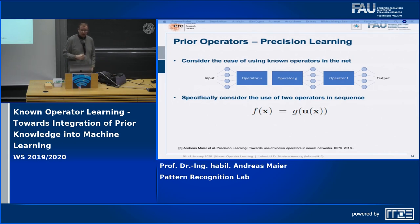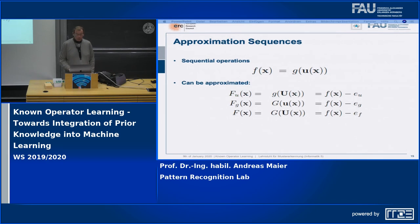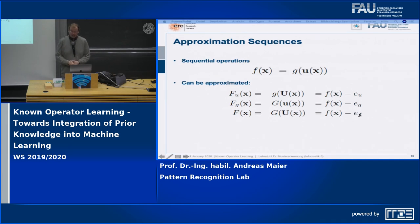Let's start with a very simple function. We assume there is some function f of x, where x is a vector value, and there's a decomposition into some function g of a function u of x, which is a vector-to-vector mapping, and we know that this decomposition must exist. Using the universal approximation theorem, we can think about the effect of approximating different parts of this function. I can know g and approximate u — this gives me some approximation of f of u of x. Or I can know u and approximate g — this gives me some approximation g of x. Both introduce some errors: error e_u and e_g. And of course I can approximate both, which introduces error e_f.